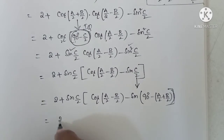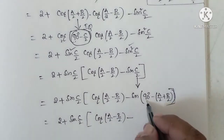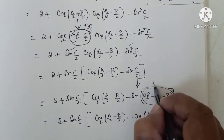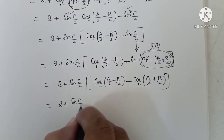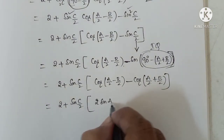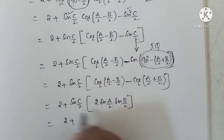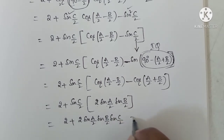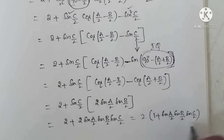Closing the bracket: 2 plus sin(c by 2) into cos(a by 2 minus b by 2) minus cos(a by 2 plus b by 2). Converting sin to cos, opening the bracket: cos(a by 2 plus b by 2) — this is in the first quadrant, sin is positive, positive into negative gives negative. Now the last step: applying the formula cos(a minus b) minus cos(a plus b) equals 2 sin a sin b, we get 2 sin(a by 2) sin(b by 2). Therefore: 2 plus 2 sin(a by 2) sin(b by 2) sin(c by 2). Taking 2 as common: 2 into 1 plus sin(a by 2) sin(b by 2) sin(c by 2). This is our RHS.